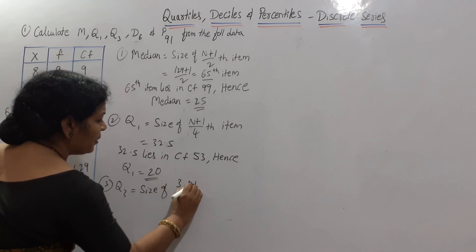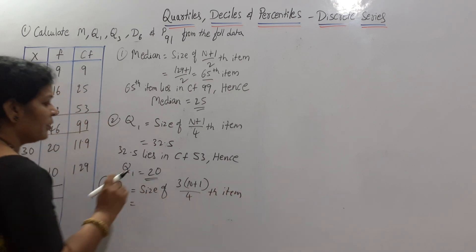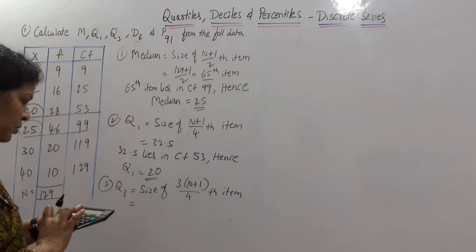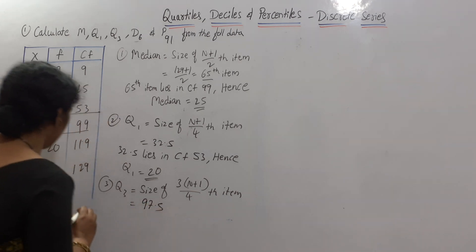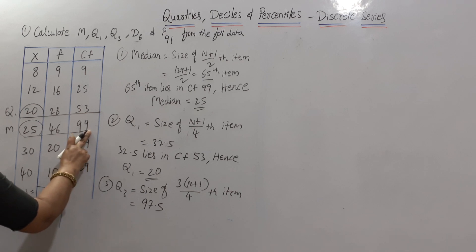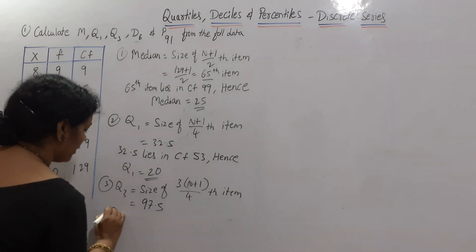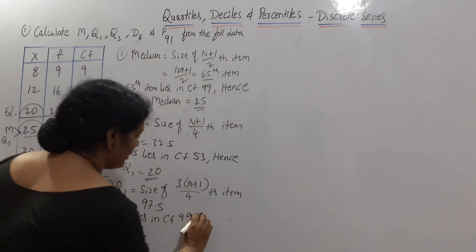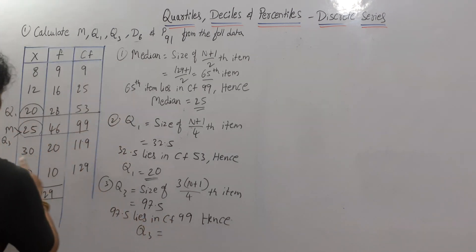For Q3, the formula is: size of 3(N+1)/4 th item. N+1 = 130, so 3×130/4 = 97.5. The 97.5th item lies in CF 99, hence Q3 = 25.